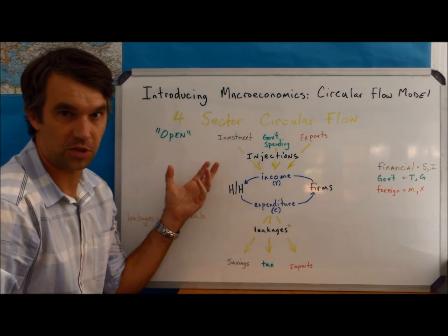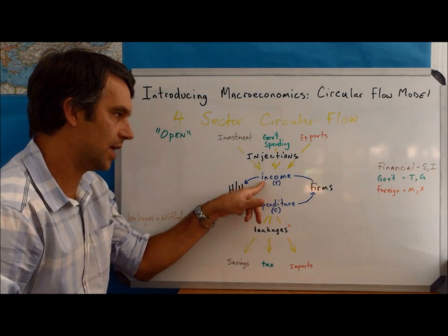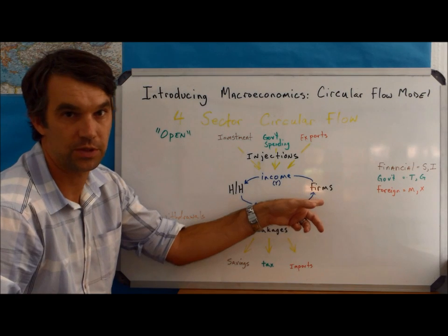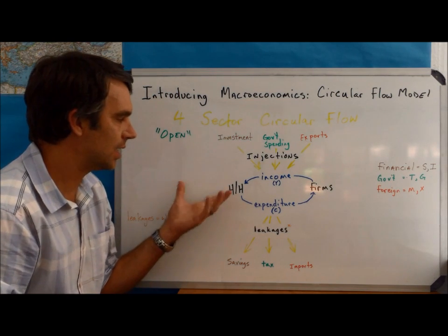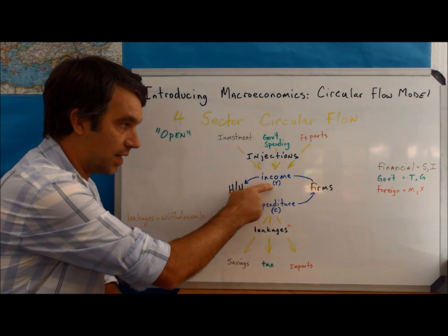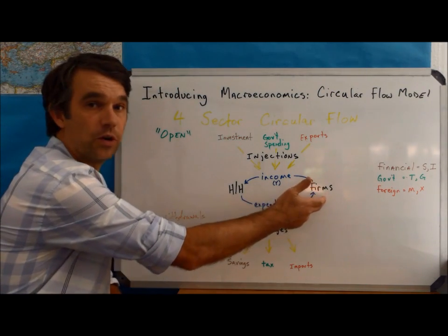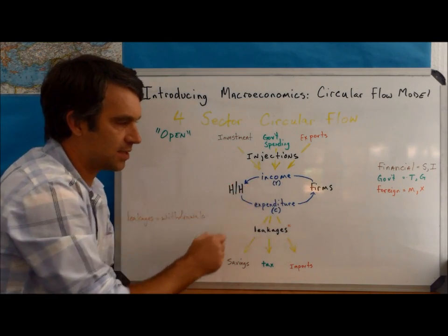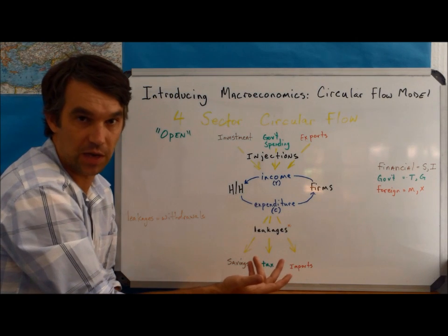When we talk about the four-sector circular flow, what we're talking about is this idea that the income that households get won't necessarily equal the expenditure that the households have to firms. So let's make an example. Let's say the households in this economy, and there's multiple households in the economy, let's say they have an income of $1,000. Well, not all $1,000 of this income is going to then return to firms in this circular flow. Keep in mind, there's multiple firms in this economy as well. So let's say that of the $1,000 that comes in as income, only $700 ends up back with the firms. So we have to ask, where did that $300 go?